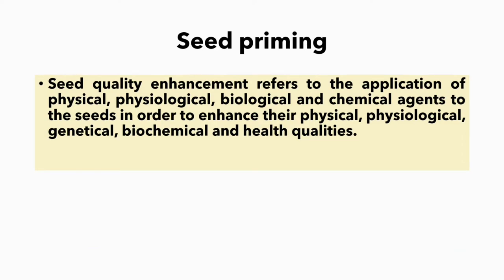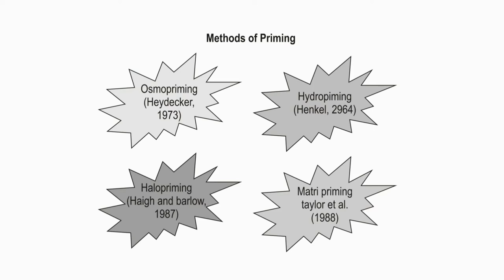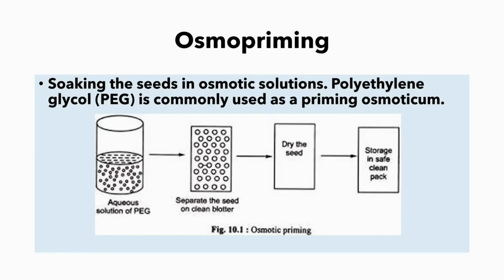Now we are going to see seed priming. Seed quality enhancement refers to application of physical, physiological, biological, and chemical agents to the seeds in order to enhance their physical, physiological, genetical, biochemical, and health qualities. There are four methods of priming: osmo priming, halo priming, hydro priming, and solid matrix priming.